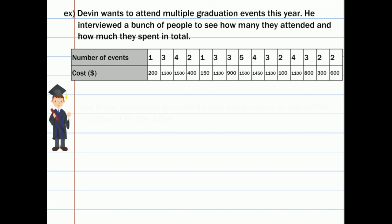Here is a polynomial regression example from your textbook, page 304, number 9. This question has somebody wanting to attend multiple graduation events. They interviewed a bunch of people to see how many events they attended and how much they spent in total. The question asks us to use linear regression to estimate how many events they can afford if they had $750.